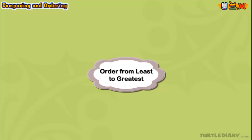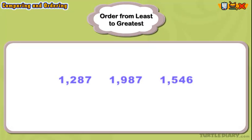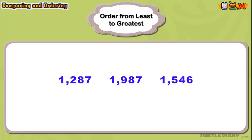Order from least to greatest. In this example, we have three numbers. We will put them in order from least to greatest using what we learned about comparing numbers.